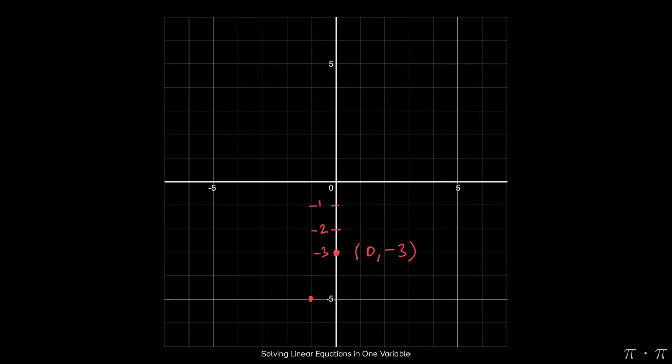The next point that the line goes through is 0 comma negative 3. That means we're not going to the left or to the right, we're simply moving down by three units. The last point we had was 1 comma negative 1. That meant right by one unit, and then down to negative 1.